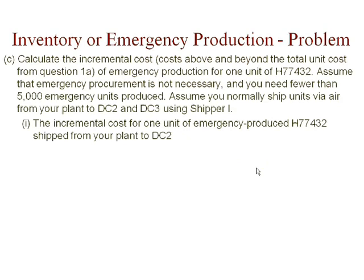Now calculate the incremental cost — costs above and beyond the total unit cost — for emergency production of one unit of this product. Assume that emergency procurement is not necessary and you need fewer than 5,000 emergency units produced. This 5,000 is the limit for emergency production. It costs you some money to keep that limit just in case your sales forecasts are off from actual sales. This company has established 5,000 as that maximum limit for emergency production.